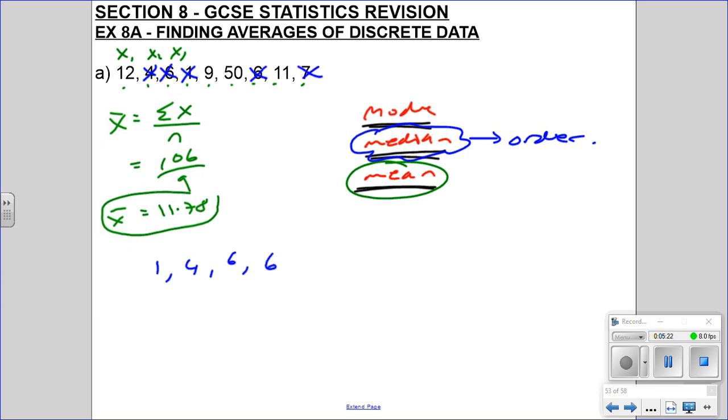And we can be systematic. So 1, we've got 4, we've got 6, we've got another 6, we've got 7, we've got a 9, we've got an 11, a 12, and a 50. So this is now our x1, our x2, our x3, all the way up to our 9th bit of data here, x9.